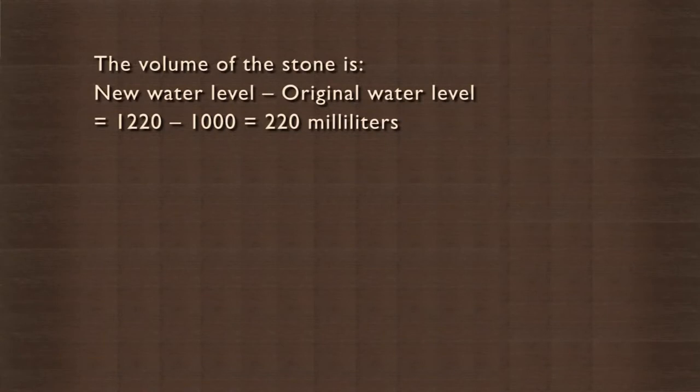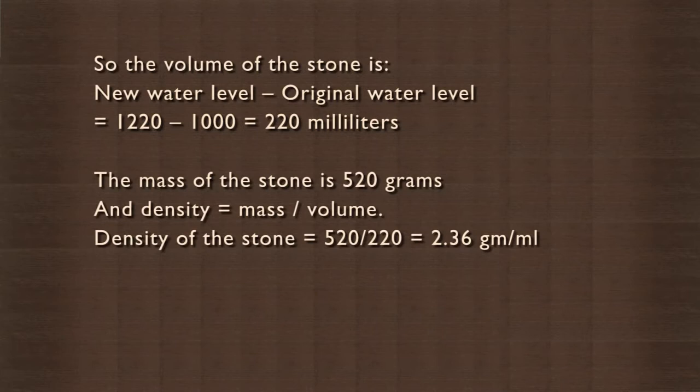So the volume of the stone is the new water level minus the original water level. That is 1,220 minus 1,000, which gives 220 milliliters. The mass of the stone is 520 grams, and density is mass upon volume.